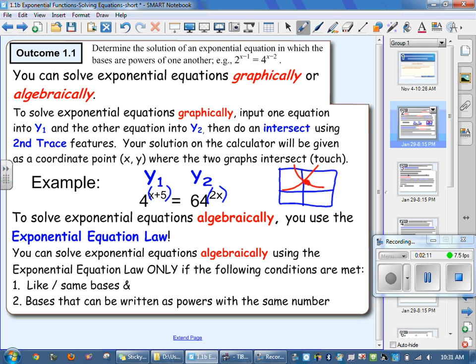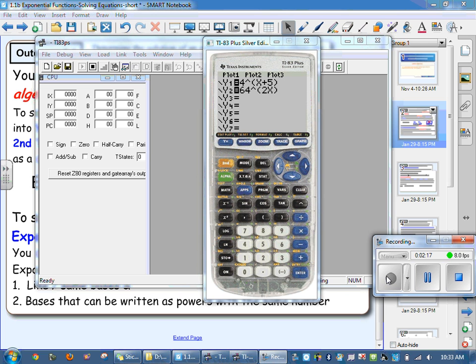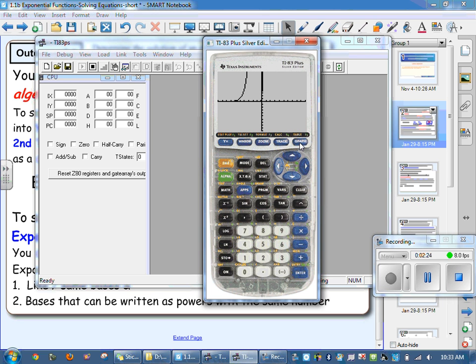Did anyone get that? Did it look like this? I've put my equations in the y equals. Now I'm going to hit the graph button. I may not see much right now. That means right now, I can't see where they touch.